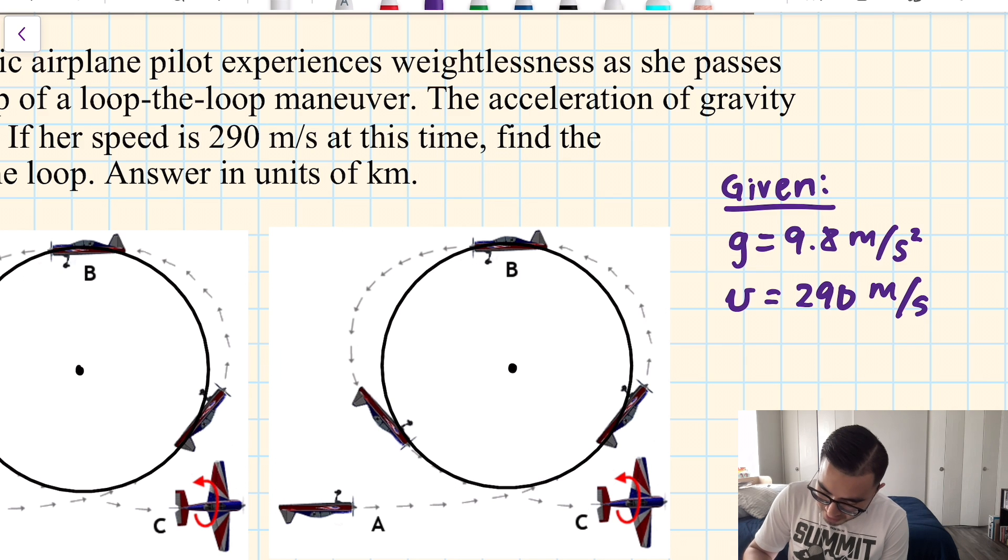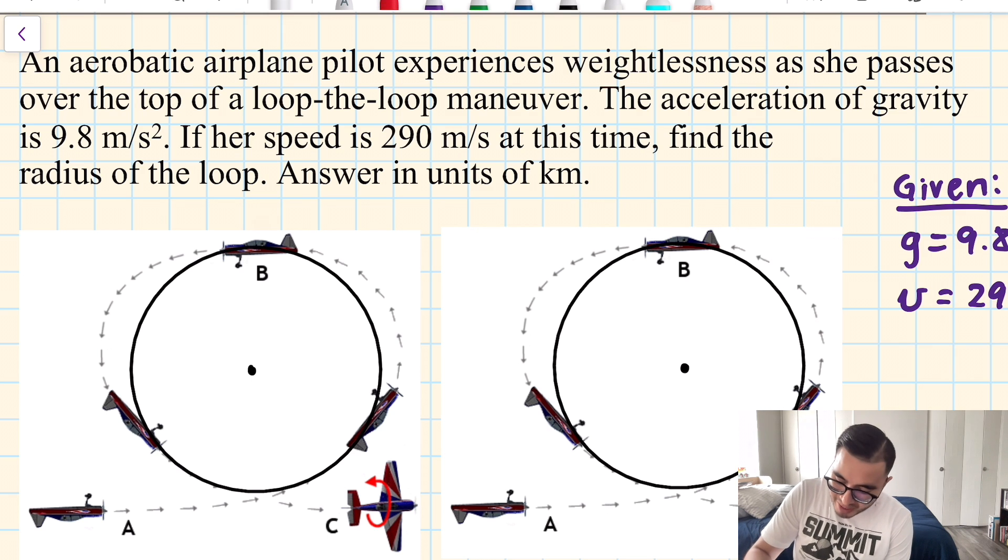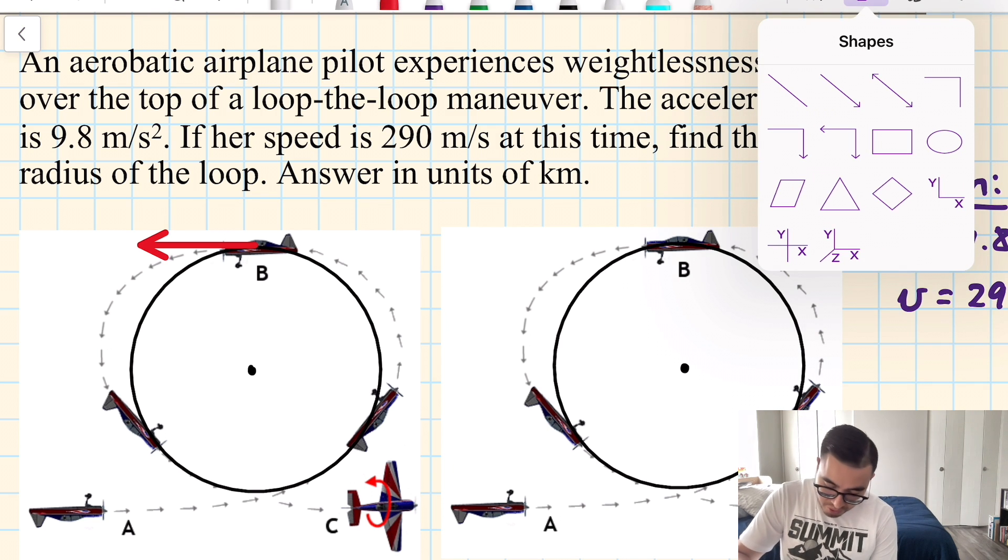And that velocity, I'm hoping you identify the fact that it's going to be tangential to the circle. That is tangential velocity. So, if we look at this point, or any point in the circle, because this is uniform circular motion, that 290 meter per second speed will have a different direction every time. But it'll be tangent to the circle.